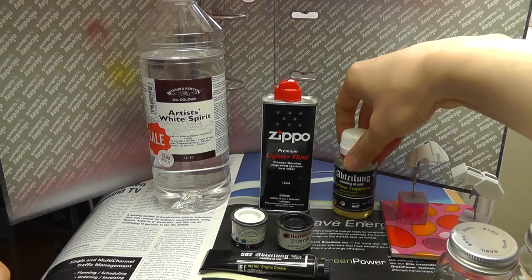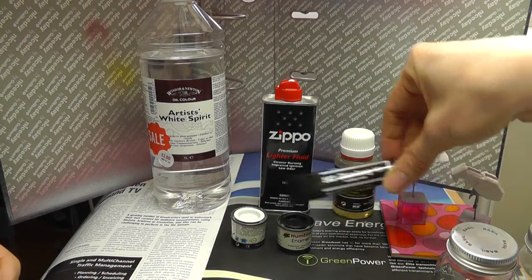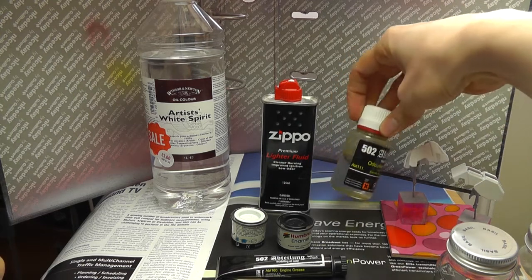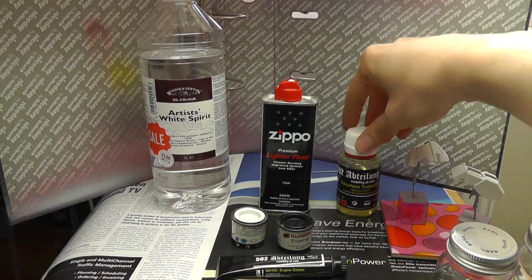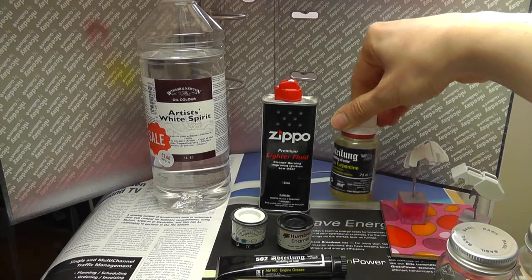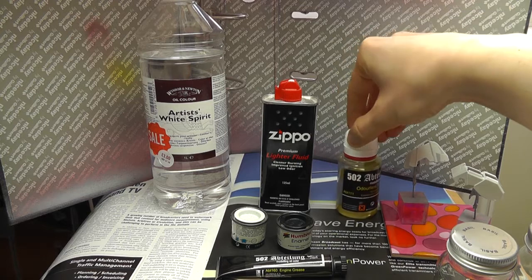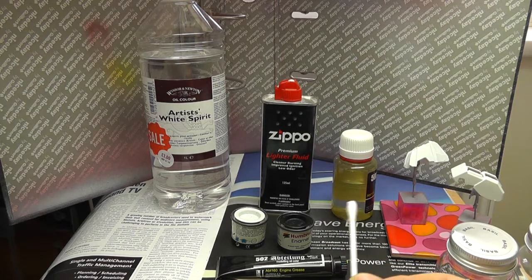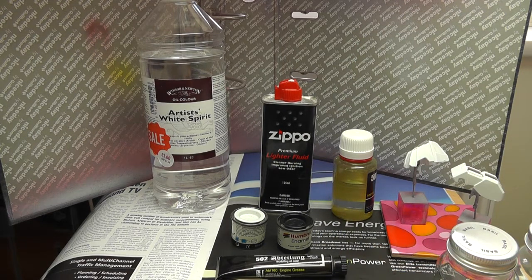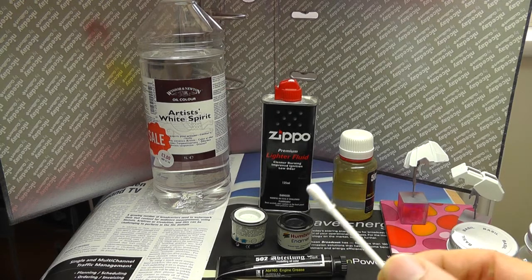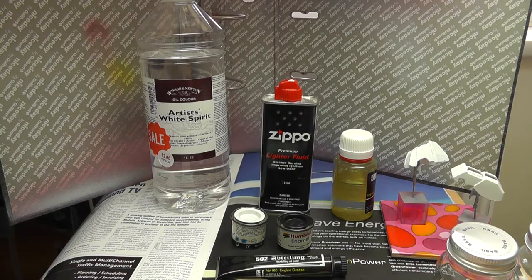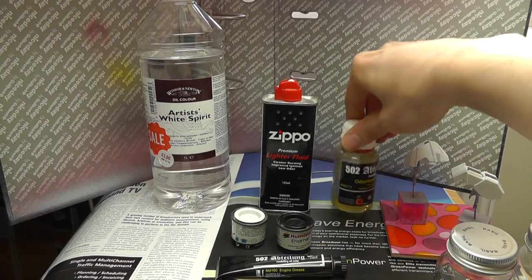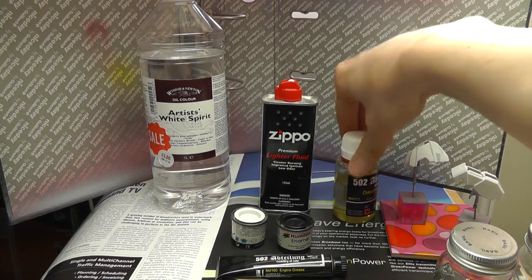And then the most expensive is the Odorless Turpentine from MIG Products, the Abteilung range. Really lovely stuff. Doesn't have much of an odour to it, as the name suggests. Very expensive. This was maybe £8 for 75ml. But it is smooth. As you trace your cotton swab over your piece, it doesn't have a sticky feel at all. It just very gently removes any oil or enamel that you have without actually risking damaging the surface of the piece. But I don't use this all the time because it's just so damn expensive.